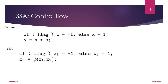Now let us see how static single assignment form for control flow will be helpful. Consider the example: if flag then x equal to minus one, else x equal to one, then the next statement is y equal to x into a. In the SSA form, the first x value is x1 equal to minus one, and the else branch gives x2 equal to one.